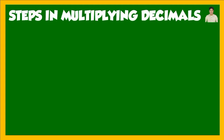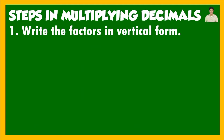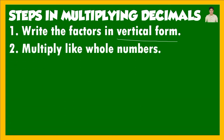Let us now discuss the steps in multiplying decimals. During our discussion on addition and subtraction of decimals, I discussed with you the steps we need to follow. Now I will be discussing the steps in multiplying decimals. The first step is to write the factors in vertical form — patayo — just like how we write whole numbers for multiplication. The factors are the numbers or decimals being multiplied. The second step is to multiply like whole numbers, the same process as multiplying whole numbers.